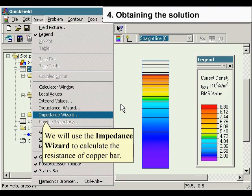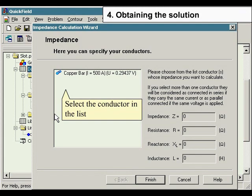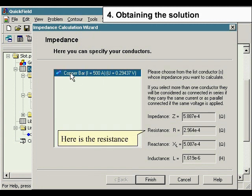We will use the impedance wizard to calculate the resistance of copper bar. Select the conductor in the list. Here is the resistance.